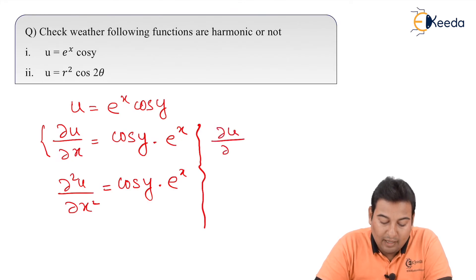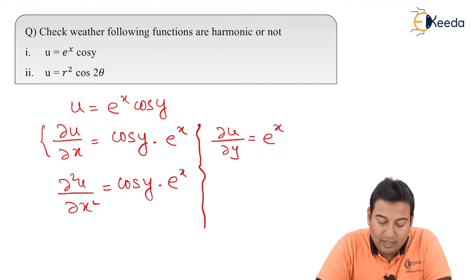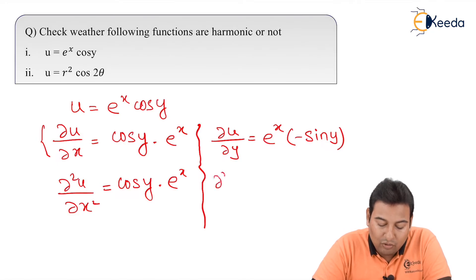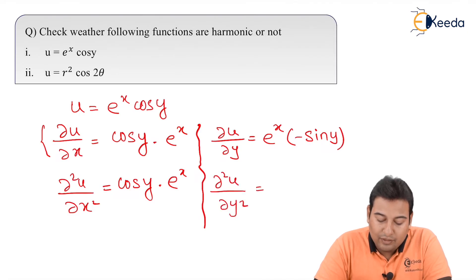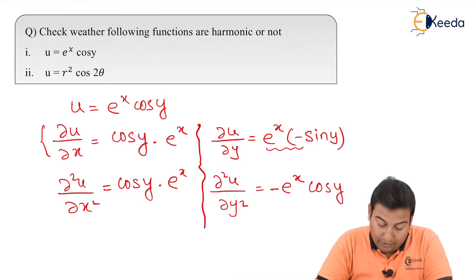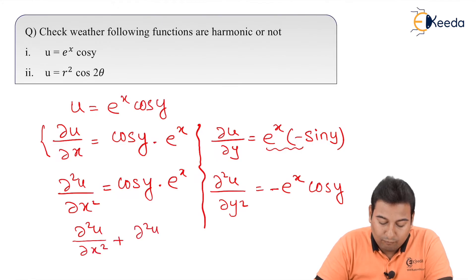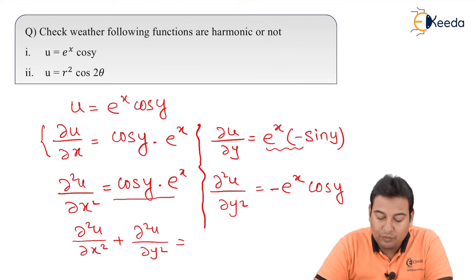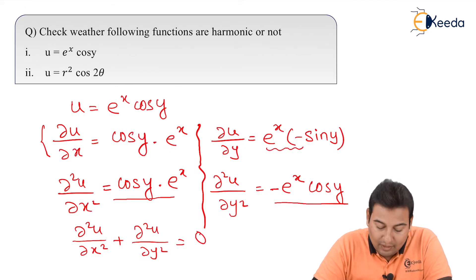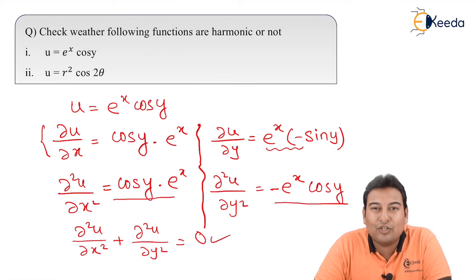Now ∂u/∂y — differentiating with respect to y, treating x as constant: e^x is constant, and cos y derivative is −sin y. Then differentiating again with respect to y: the minus is constant and sin y derivative is cos y, so ∂²u/∂y² = −e^x cos y. Adding the two terms: the positive e^x cos y and the negative e^x cos y cancel each other — the answer is zero. That means Laplace equation is satisfied, so the function is harmonic.